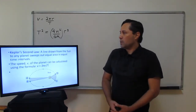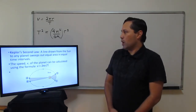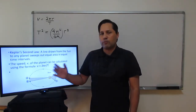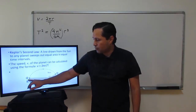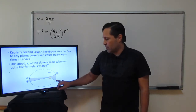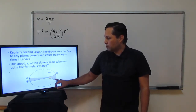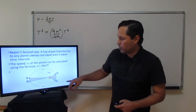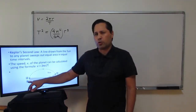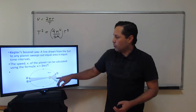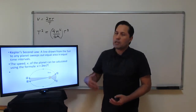Kepler's second law says a line drawn from the sun to any planet sweeps out equal areas in equal time intervals. For example, if a planet travels 30 days from one point to another, the area swept is the same as the area swept over 30 days on another part of the orbit — even though they don't look the same. Think of it as a triangle: one has a wide base and small height, the other a small base and tall height. Area equals one-half base times height, so they balance out. The area swept over the same amount of time is the same regardless of where the planet is in its orbit.